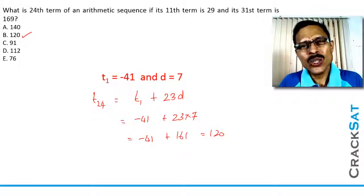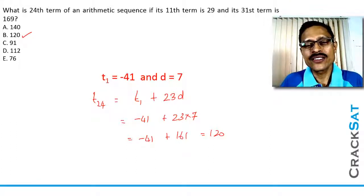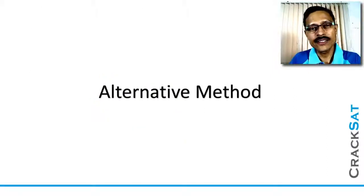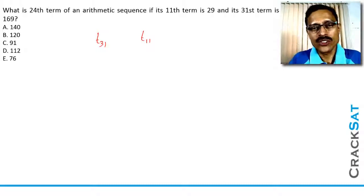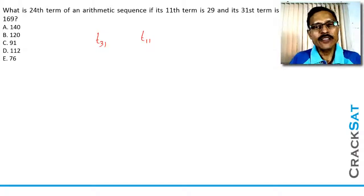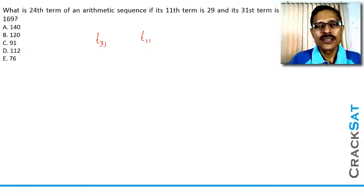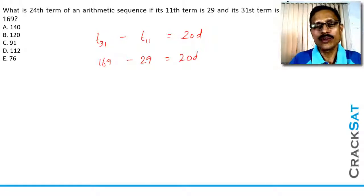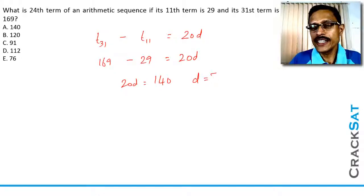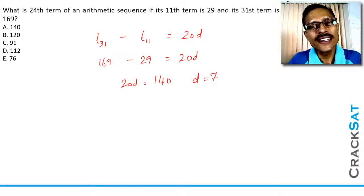Having done this, we will also quickly look at an alternative method where we can cut down some of these steps. Between the 31st term and the 11th term, there are 20 terms, meaning 20 common differences. We know the 31st term is 169 and the 11th term is 29. So 169 minus 29 equals 20 times d, giving 20d equals 140, and therefore d equals 7, without writing out the full equations for T11 and T31.